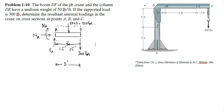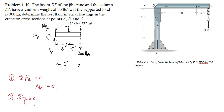Applying the first condition of equilibrium — summation of all forces in the x-direction equal to zero — there is no other force in the x-direction, so NA is equal to zero. Applying the second condition of equilibrium — summation of all forces in the y-direction equal to zero, considering upward forces as positive — the 300-pound force acts downward (negative), the 150 pounds also acts downward (negative), and VA acts upward (positive). From this equation, VA equals 450 pounds.